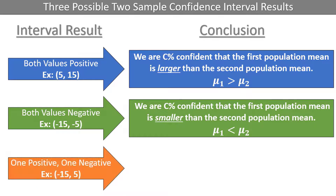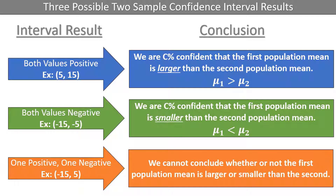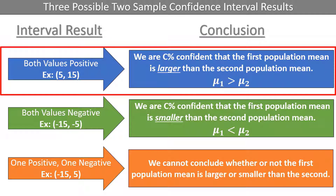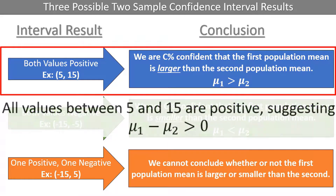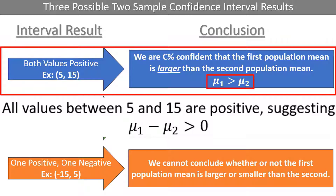If one value is positive and the other is negative, such as negative 15 to 5, we cannot conclude whether or not the first population mean is larger or smaller than the second. Stopping to think about these rules, they should make logical sense. If the difference in sample means produces a confidence interval with two positive numbers, such as between 5 and 15, every single value in that interval is positive, suggesting mu1 minus mu2 is greater than 0 in all cases. The only way for mu1 minus mu2 to be positive is if mu1 is greater than mu2, so the conclusion holds.